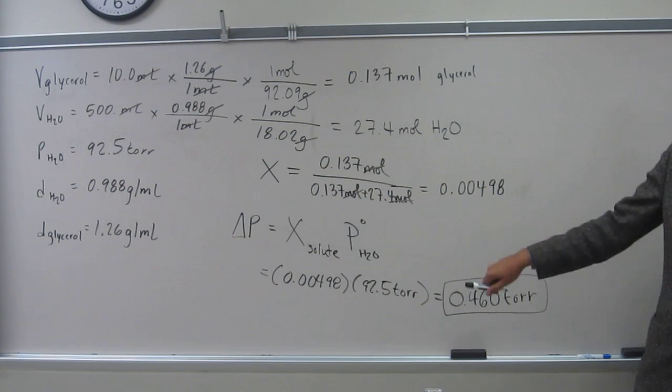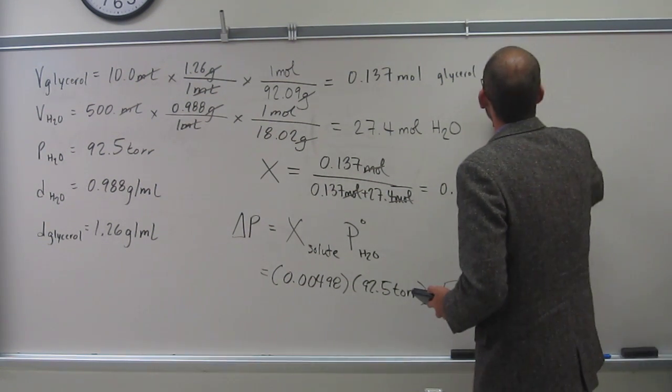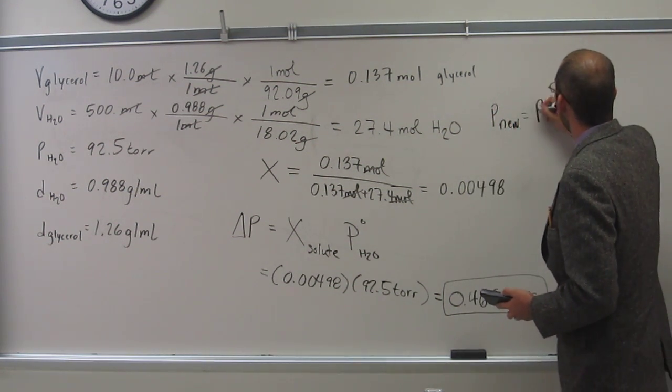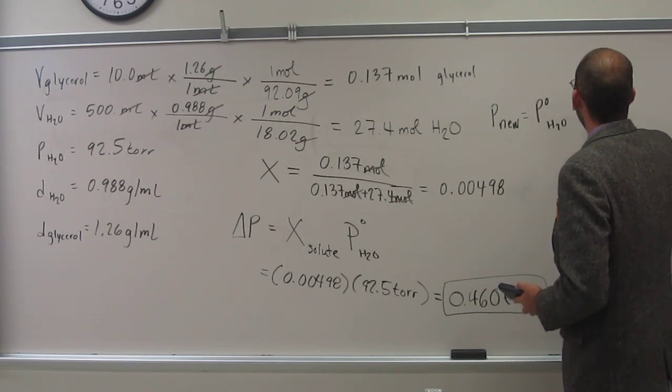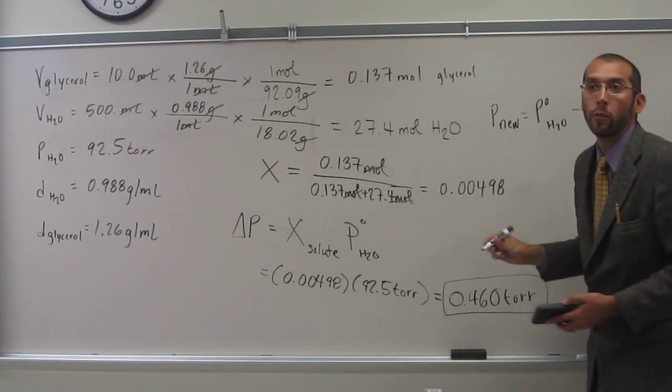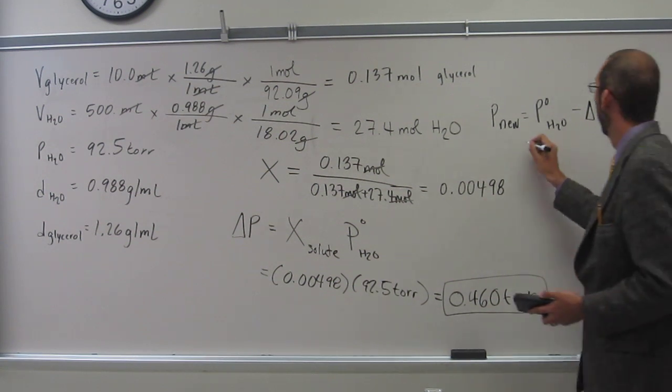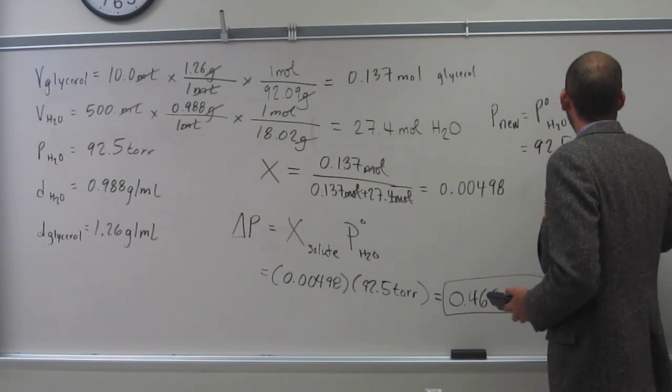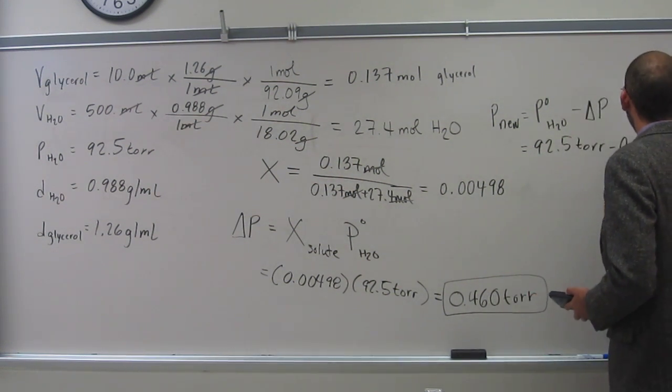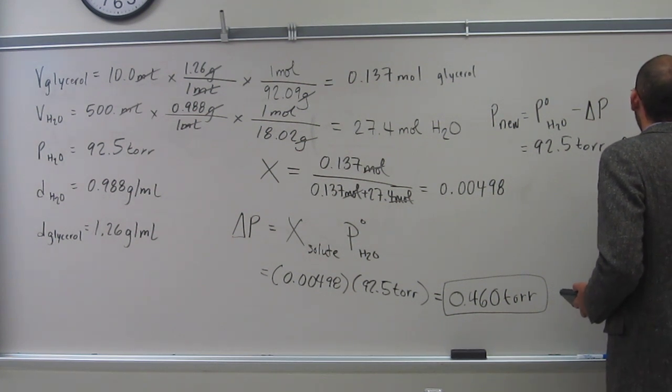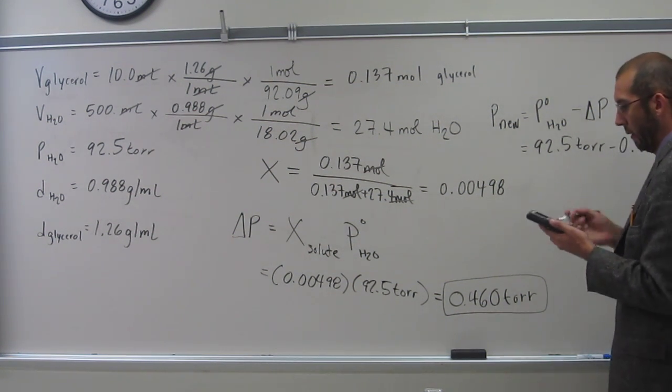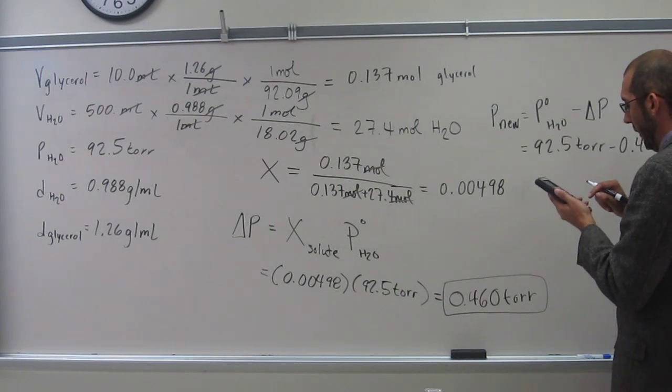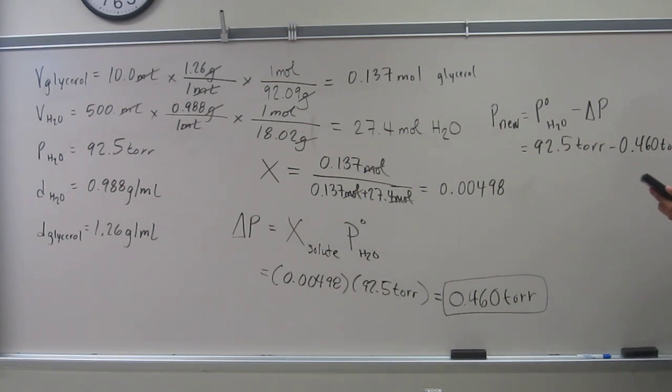So what would be the new pressure? The new pressure is going to be the original pressure. So what was the pressure? 92.5 torr minus 0.460 torr. So when we do that, 92.5 minus 0.460.